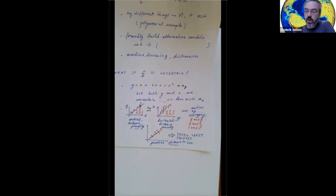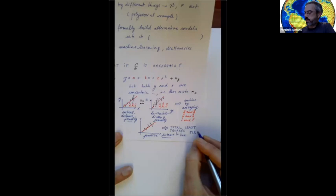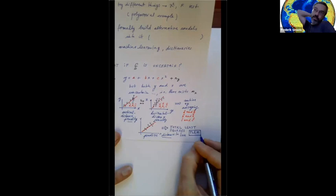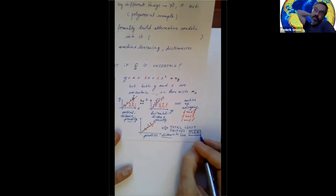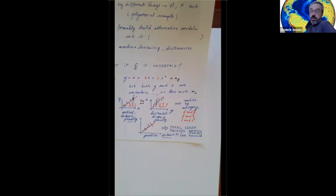That leads to a term I'll throw out: total least squares. Books have been written about it — it's complicated because it involves squares and square roots. On my webpage I have a routine called TLS that I borrowed and acknowledged, and I've used it in some of my papers. It is vital when you have uncertainty on both axes.